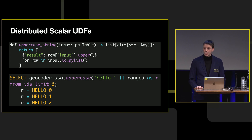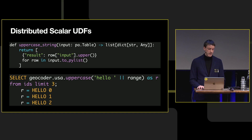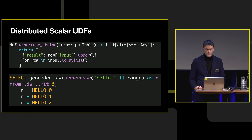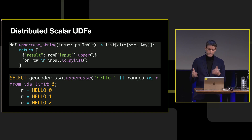And that's all you have to write to implement a new scalar UDF in DuckDB. Here's how it's called: geocoder is the database name, USA is the schema, and uppercase is the actual function.